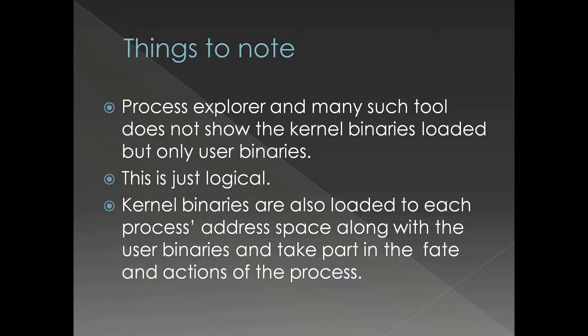When we were looking at explorer.exe, we saw the user binaries of explorer, but the kernel binaries are loaded in the upper 2 GB — which is the system address space we saw under the System process. That is actually part of explorer as well, even though Process Explorer isn't showing it under explorer directly. Any process — including explorer — consists of user binaries as well as kernel binaries. The system address space is not a separate process but is part of all processes, in the upper 2 GB. Kernel binaries are also loaded into each process's address space along with the user binaries, and take part in the actions of the process.